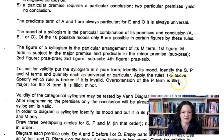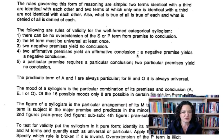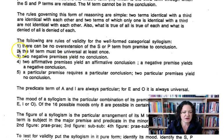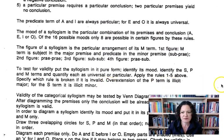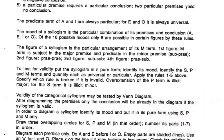Overextension of the P term is called illicit major; for the S term it's illicit minor; and for the middle term it's undistributed middle. Really, we're only going to apply rules 1 and 2 here, because we already handled rules 3 through 5 earlier when we were working with the moods. Now we test for overextension of the S or P term from premise to conclusion, and the M term must be universal at least once. Validity may also be tested by Venn diagram, which we'll do after this session.